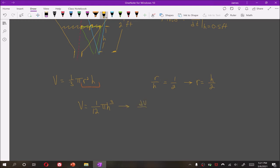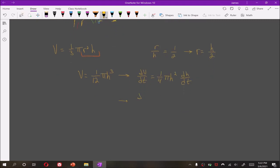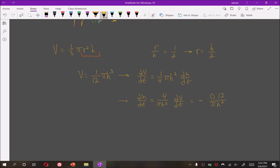This gives dV/dt as 1/4 π h² dh/dt, meaning that dh/dt is 4/(π h²) times dV/dt.